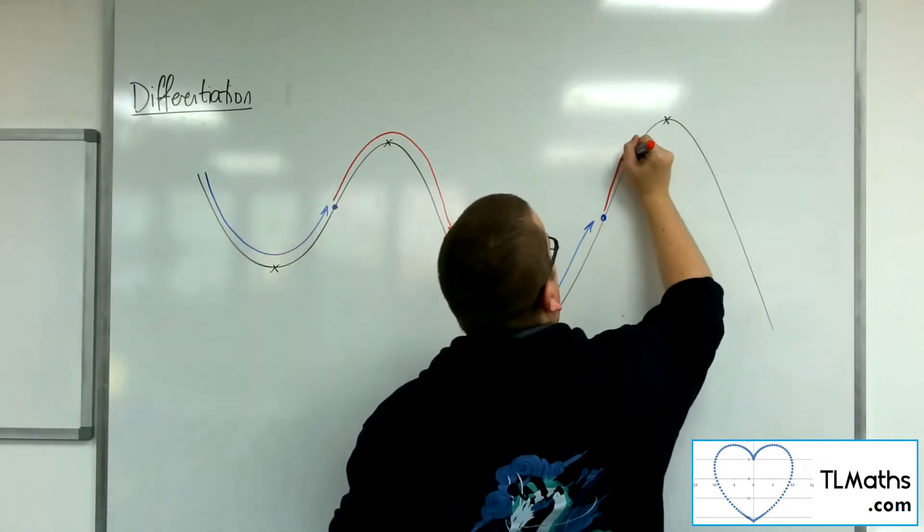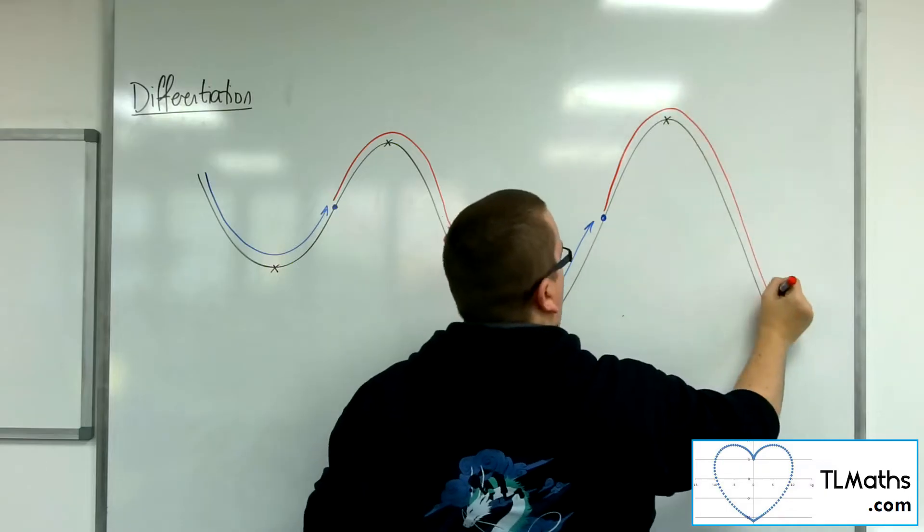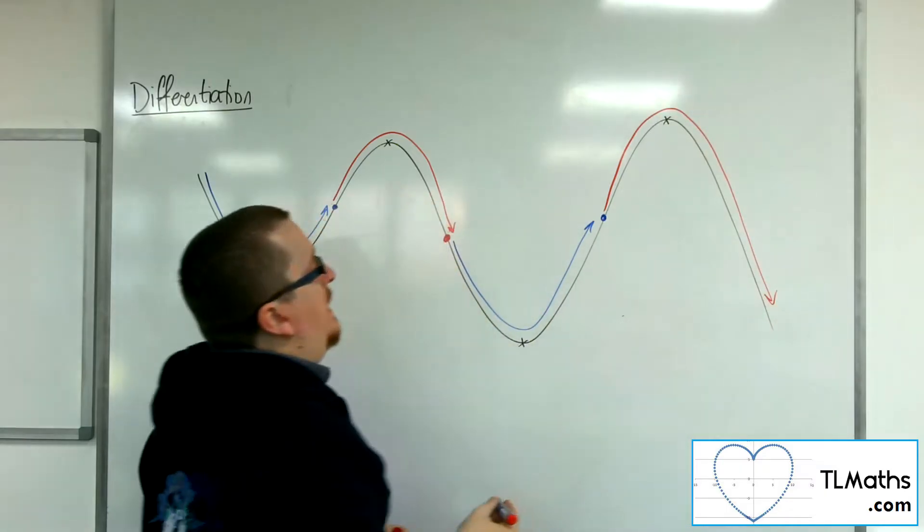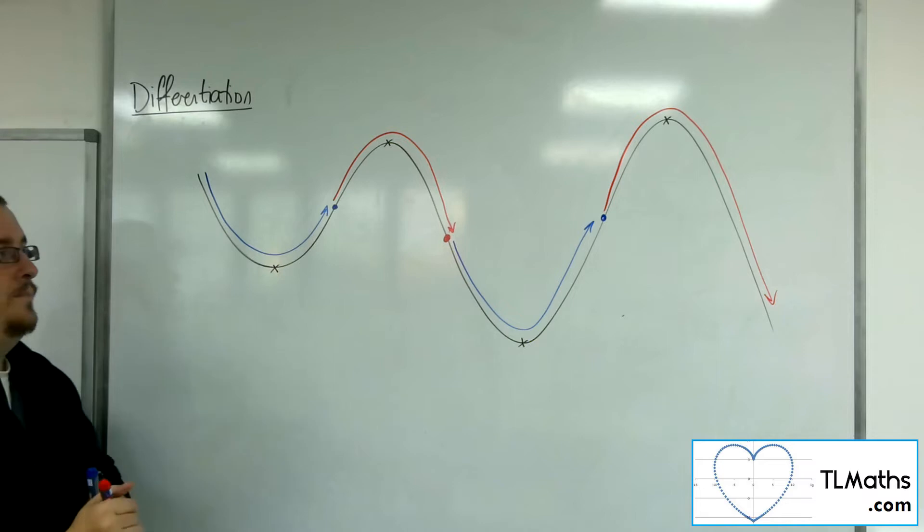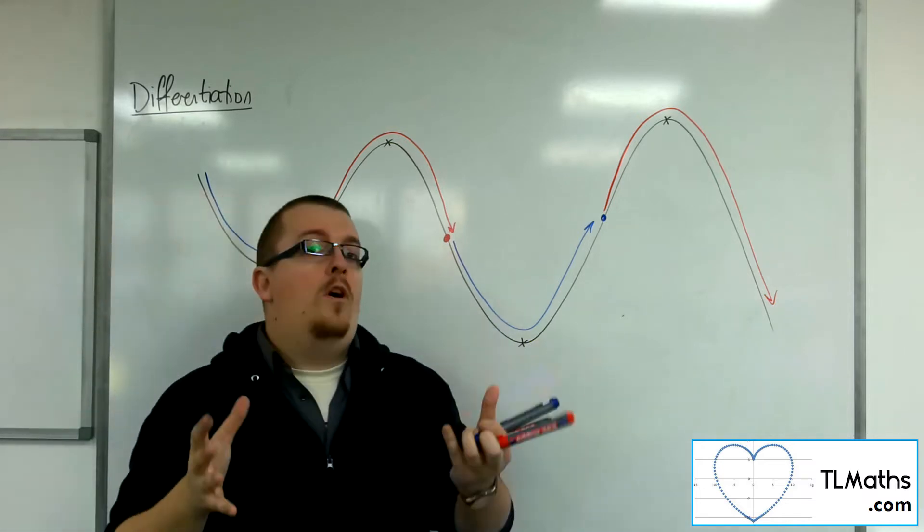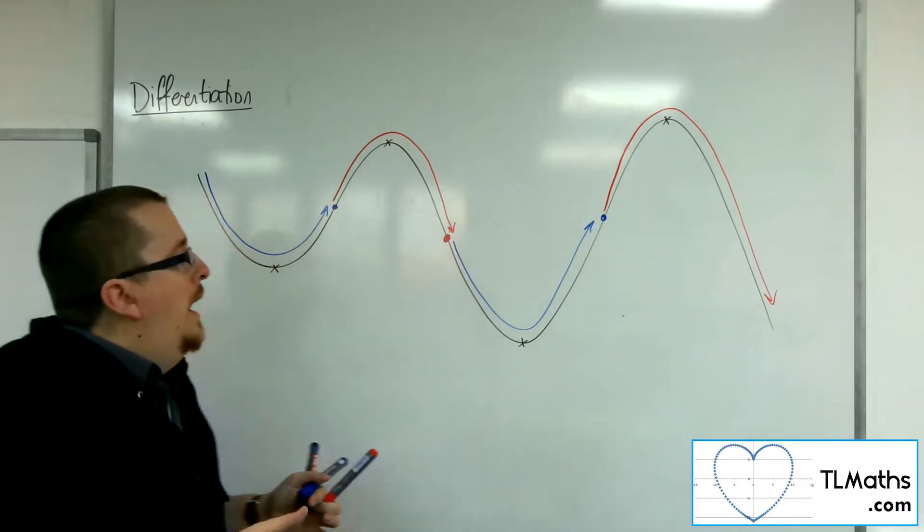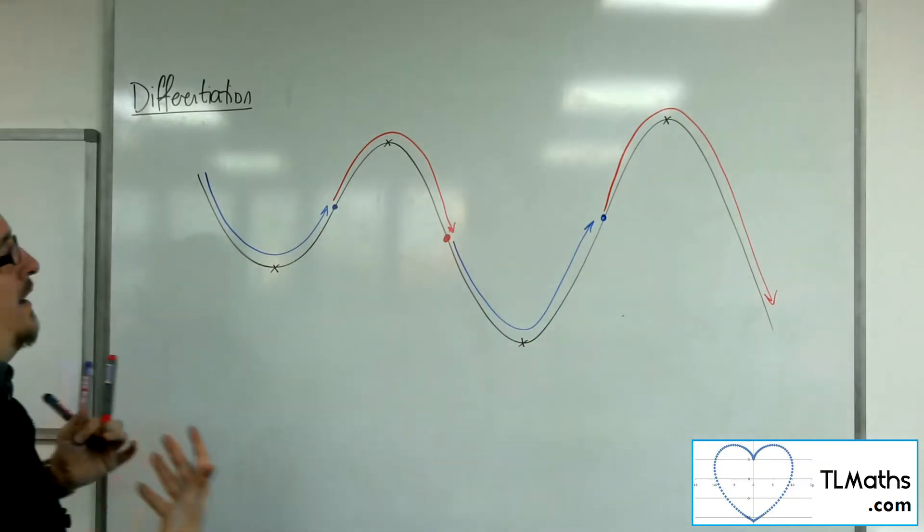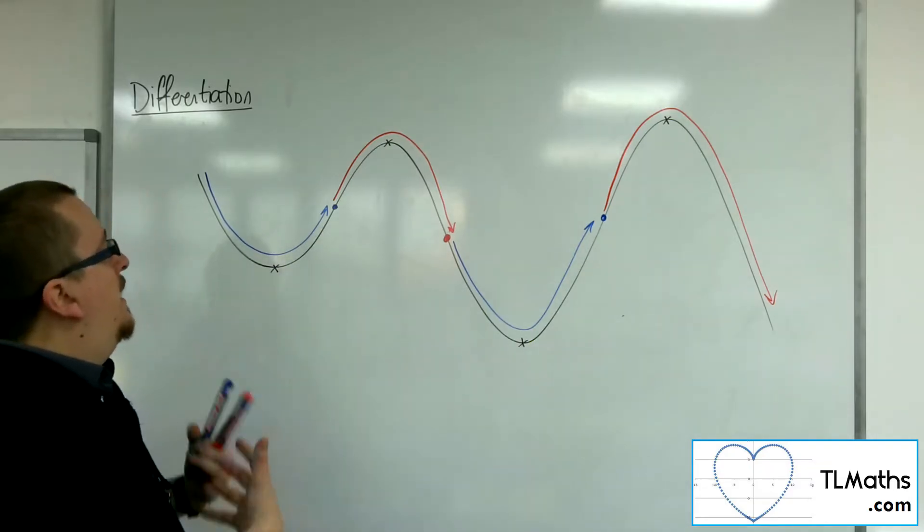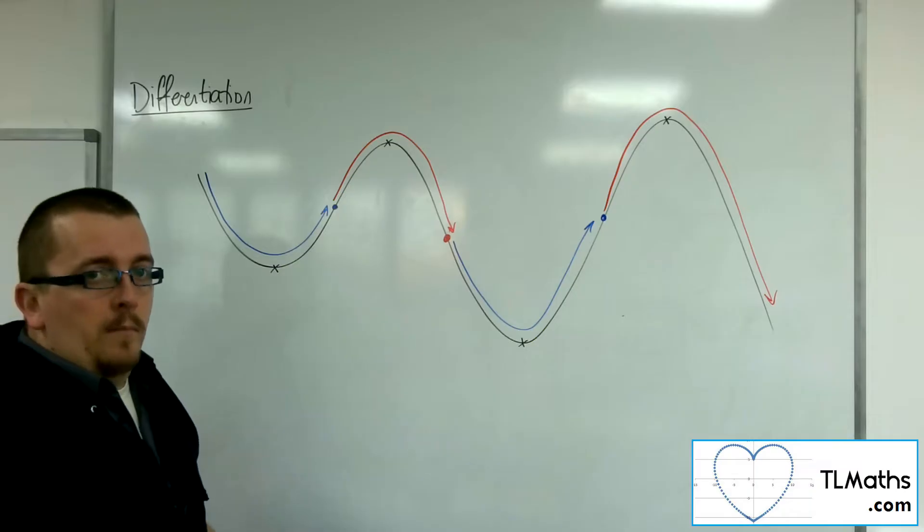And then from that point onwards, I keep going in a clockwise direction. So can I work out these regions? Can I work out where the curve is going in an anti-clockwise or clockwise motion?